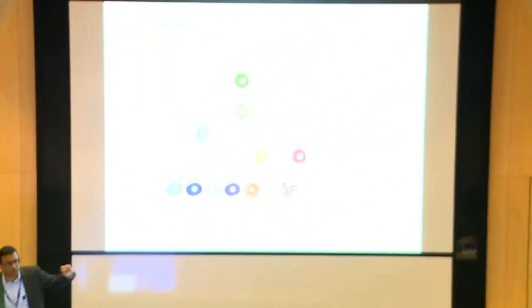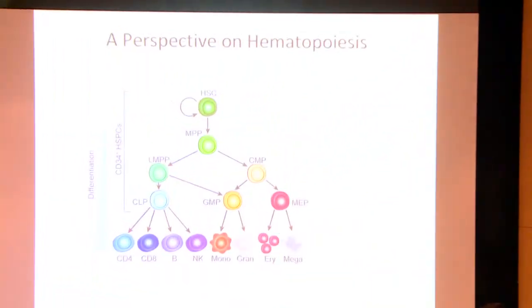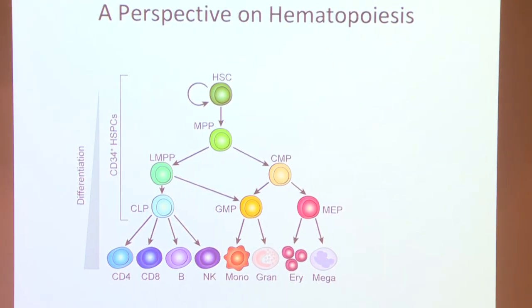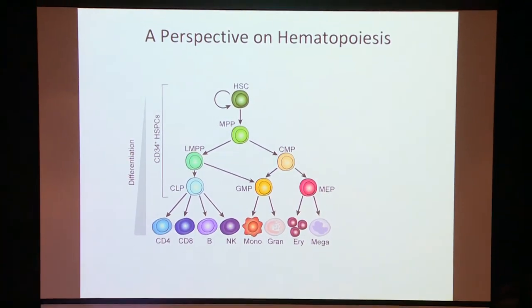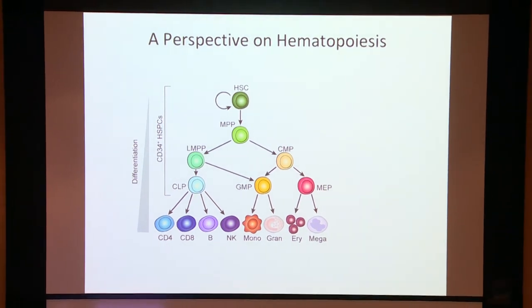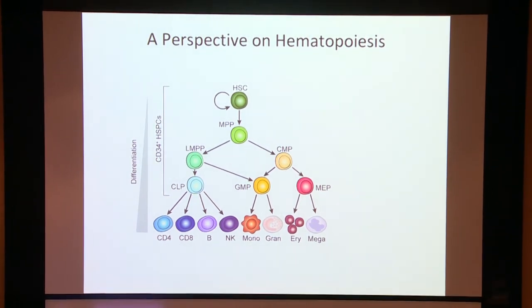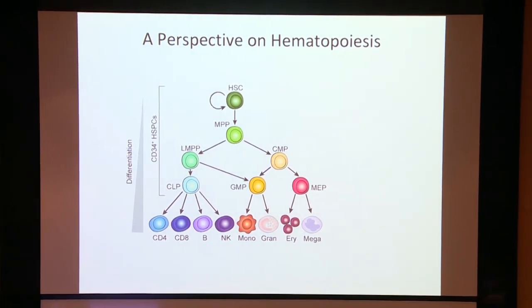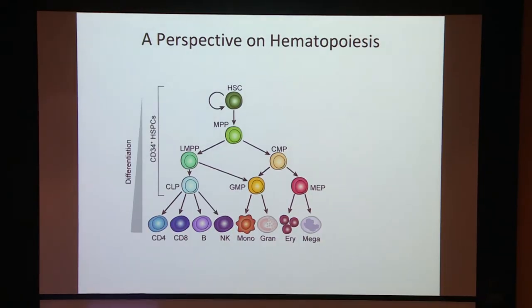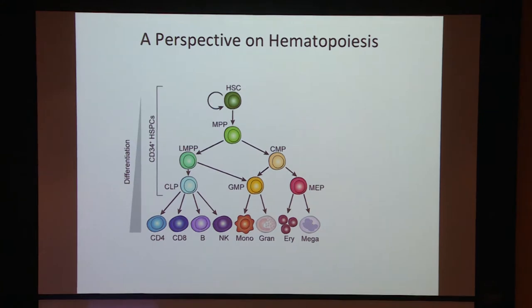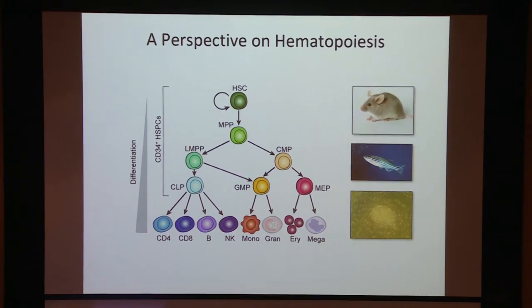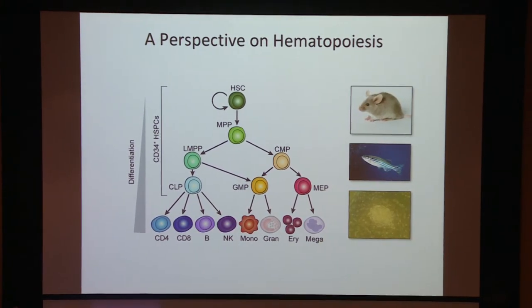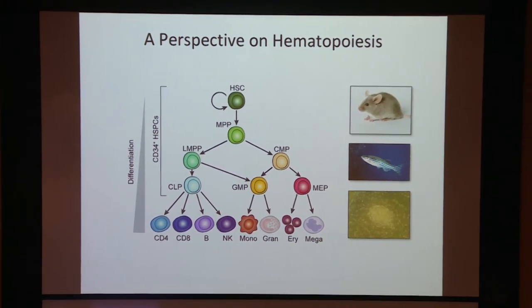Blood cell production, or hematopoiesis, as I illustrate here, is arguably one of the best understood examples of cell differentiation that we know of in human physiology. And yet, despite our understanding of this, most of the analyses and most of our knowledge of this process really stems from bulk cell analyses done in elegant model organisms.